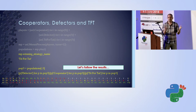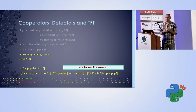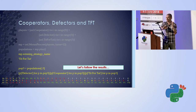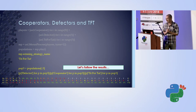There are lots of other strategies to explore: grudgers who cooperate until the first defection then defect forever; sophisticated strategies that probe opponents with a cooperate-cooperate-defect sequence then adapt; and even cheating strategies that look at the source code or internal state of the opponent's strategy — some even modifying the other strategy's state to get it to do suboptimal things.